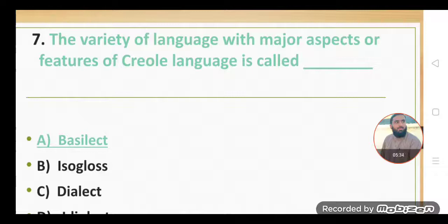Another MCQ: The variety of language with major aspects or features of creole language is called basilect. Yes, very important. We have two types of languages: major and creole. So when there are many features or more features of creole available in a variety of language, that variety will be called basilect.